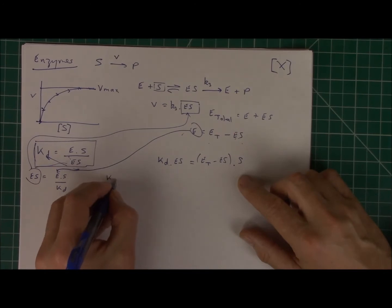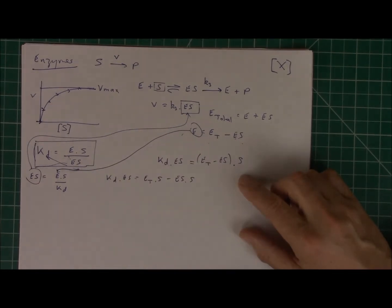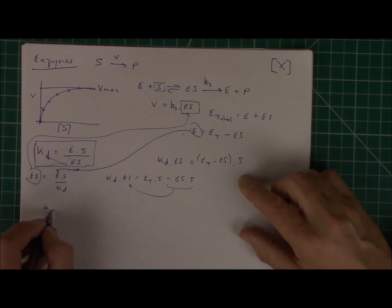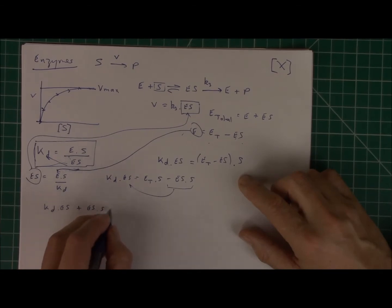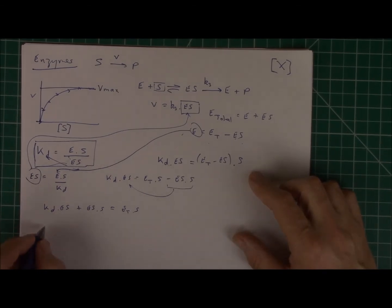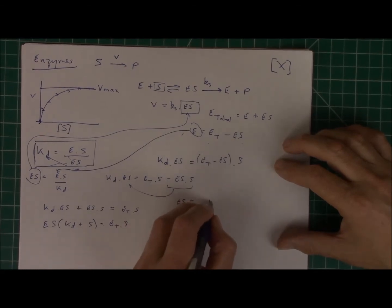So let's multiply this out. KD times ES equals ETS minus ES times S. Now I'm going to bring this one over to this side. So I'll get KD times ES. Note that the minus now turns into a plus, so plus ES times S equals ET times S. I can bring out ES onto its own. So ES times KD plus S equals ET times S. Now I can get ES on its own by dividing both sides by KD plus S, and that's when I get this. So I'm getting quite close now. KD plus S.